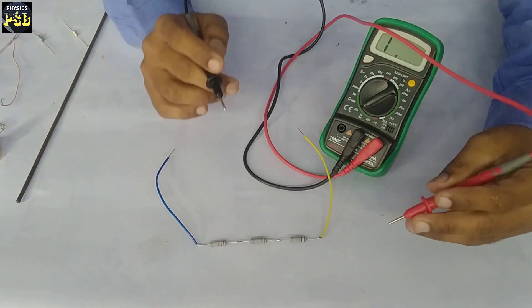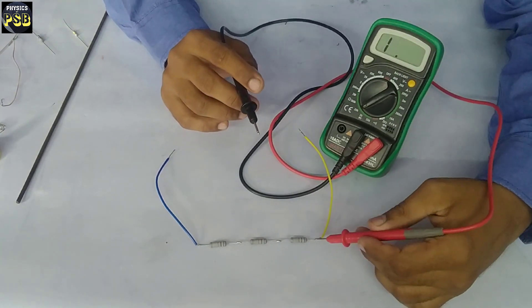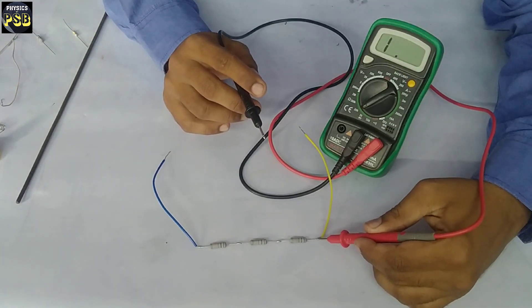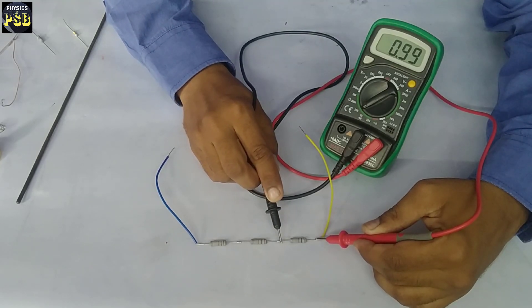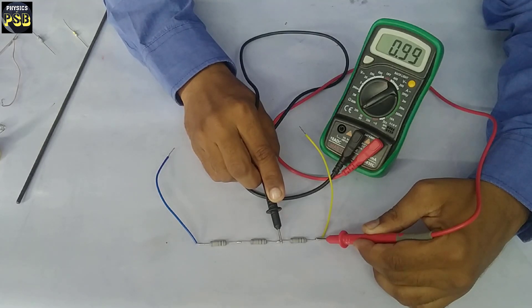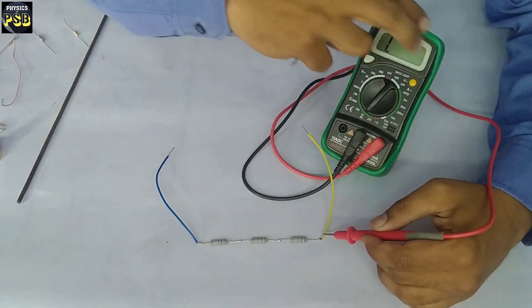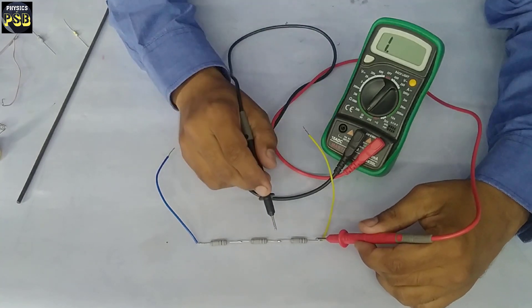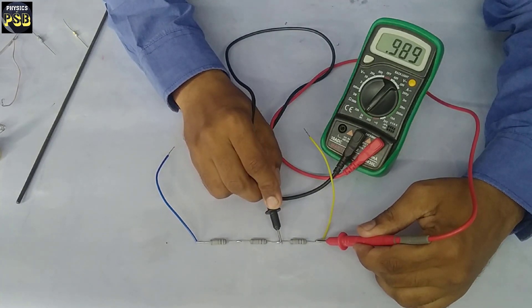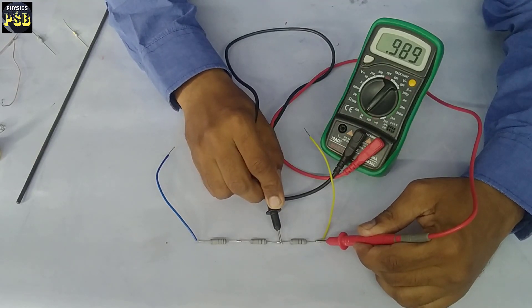First, I will place the probe across the first resistor. It reads 0.99, that means 1 kilo-ohm. Now for better accuracy, I turn this to read up to 2000 ohm. Now let me measure this. It shows 989 ohm, that is almost 1000 or 1 kilo-ohm.